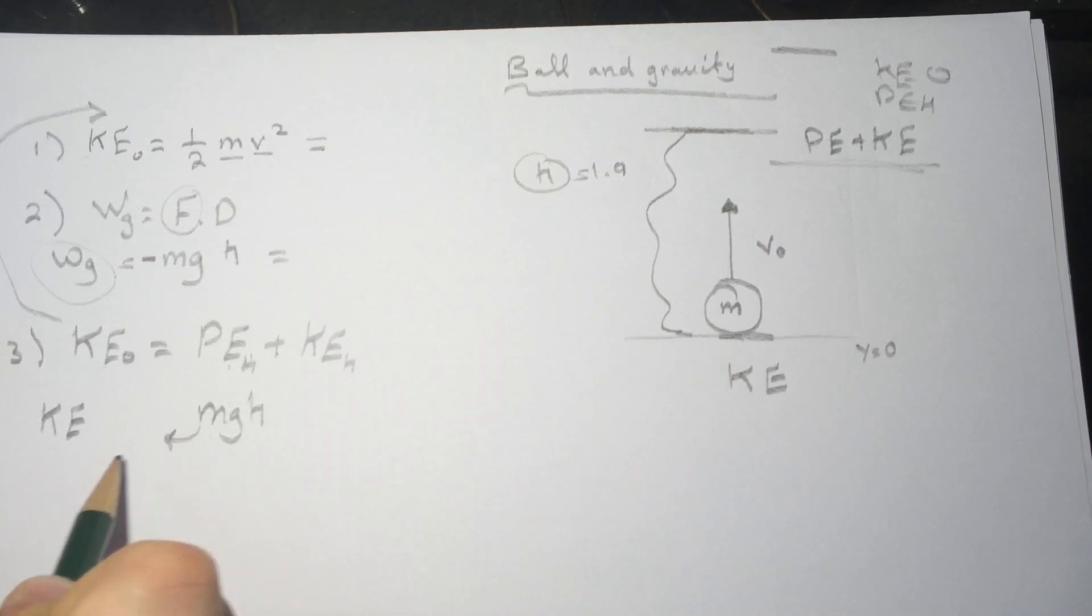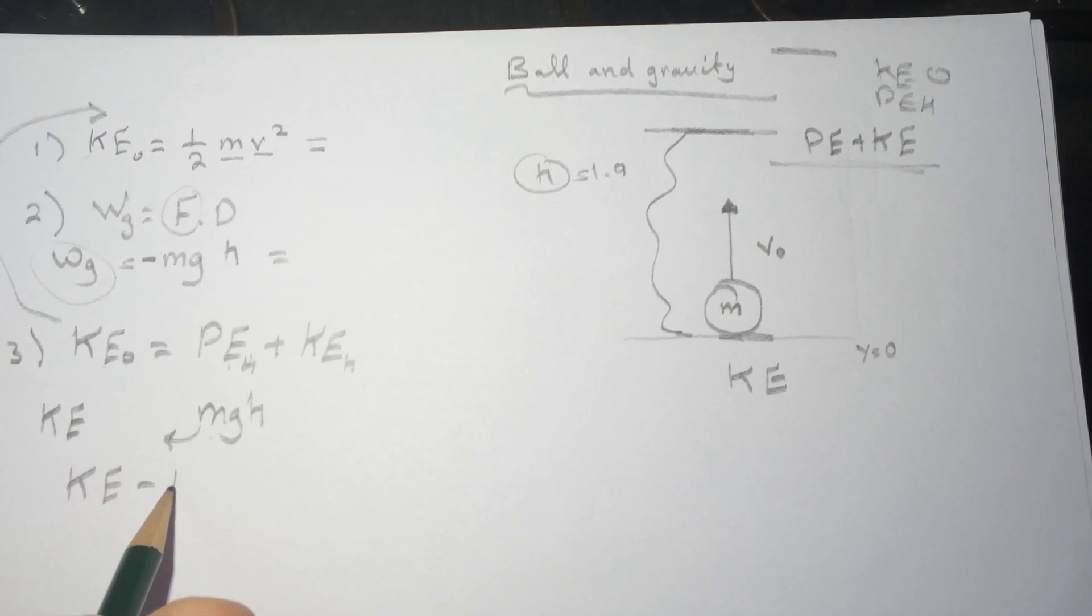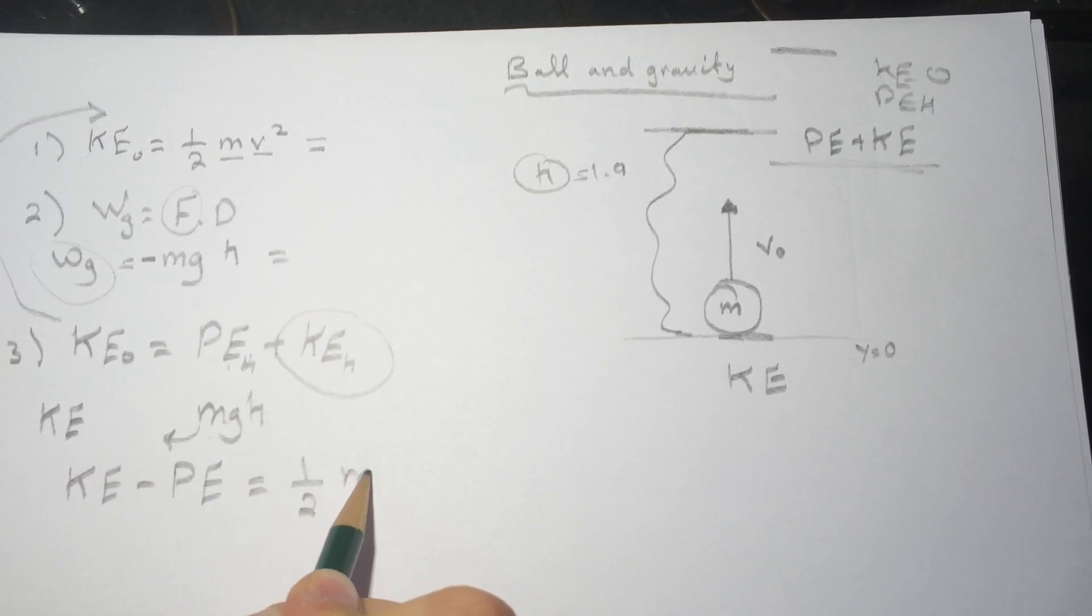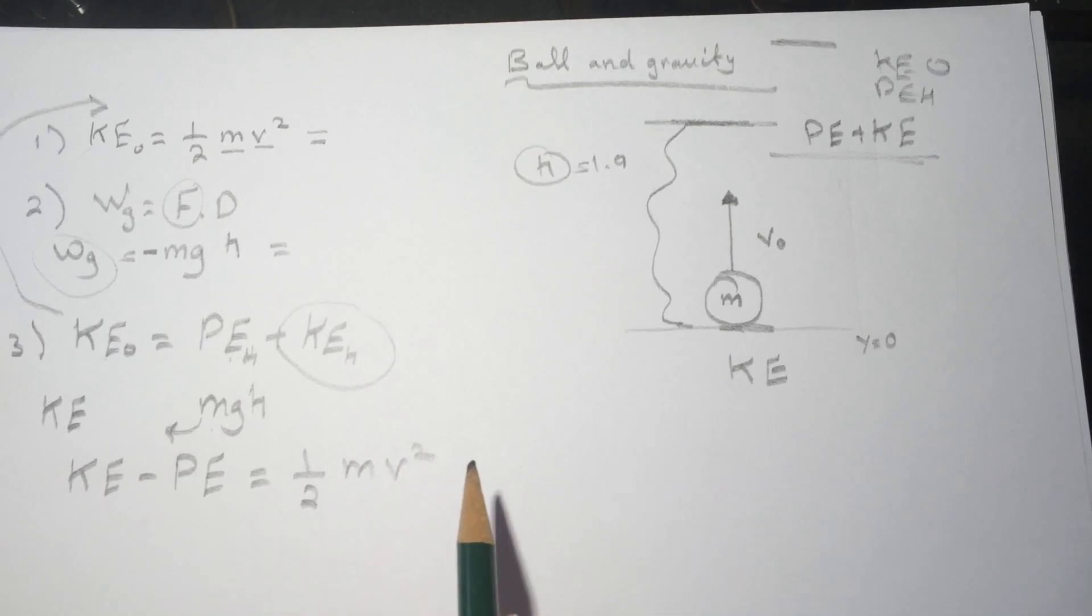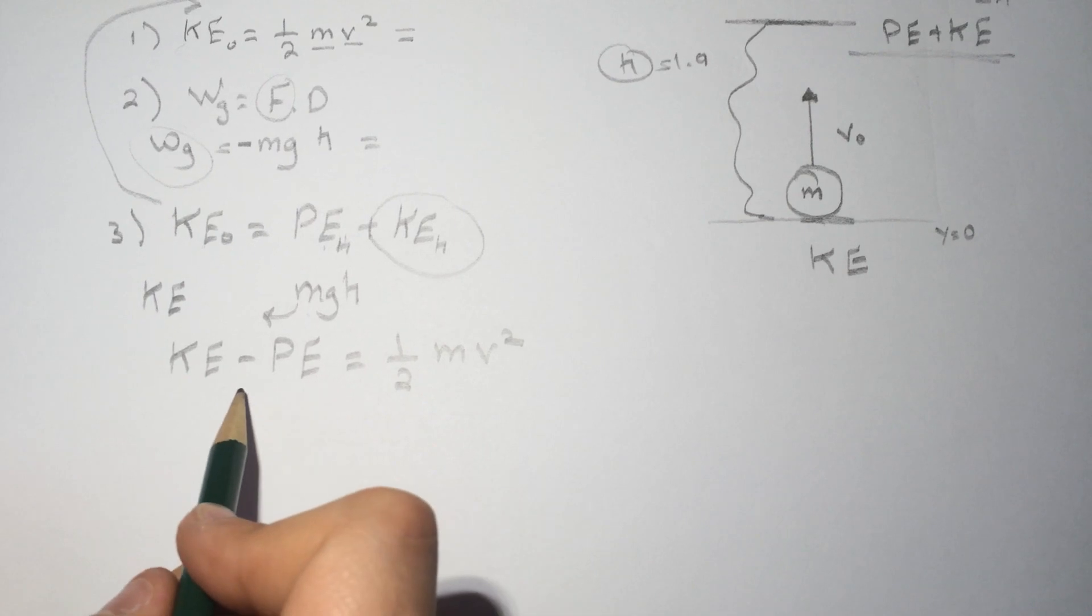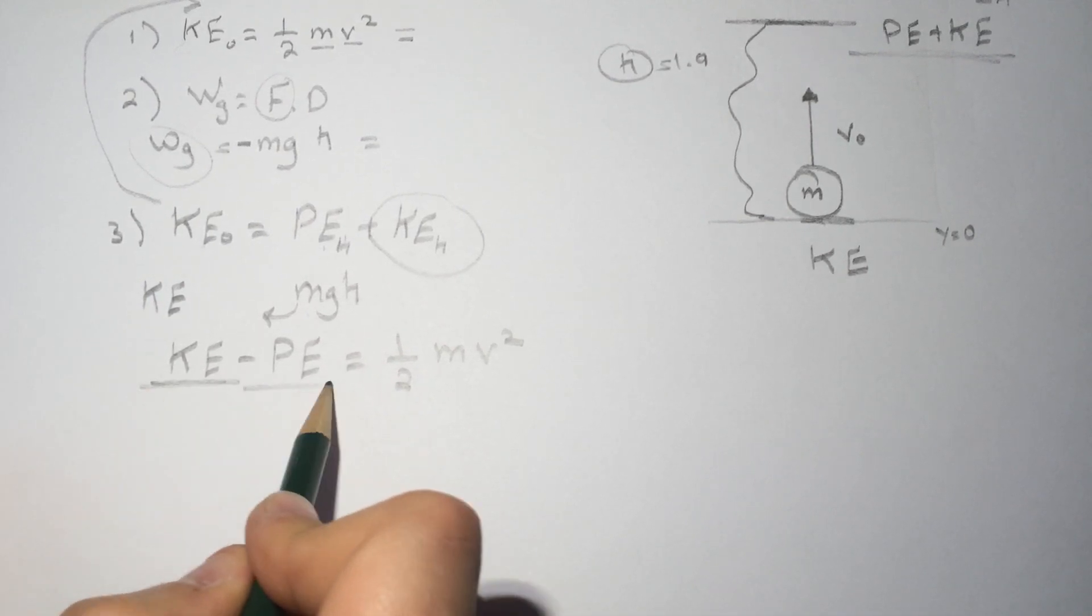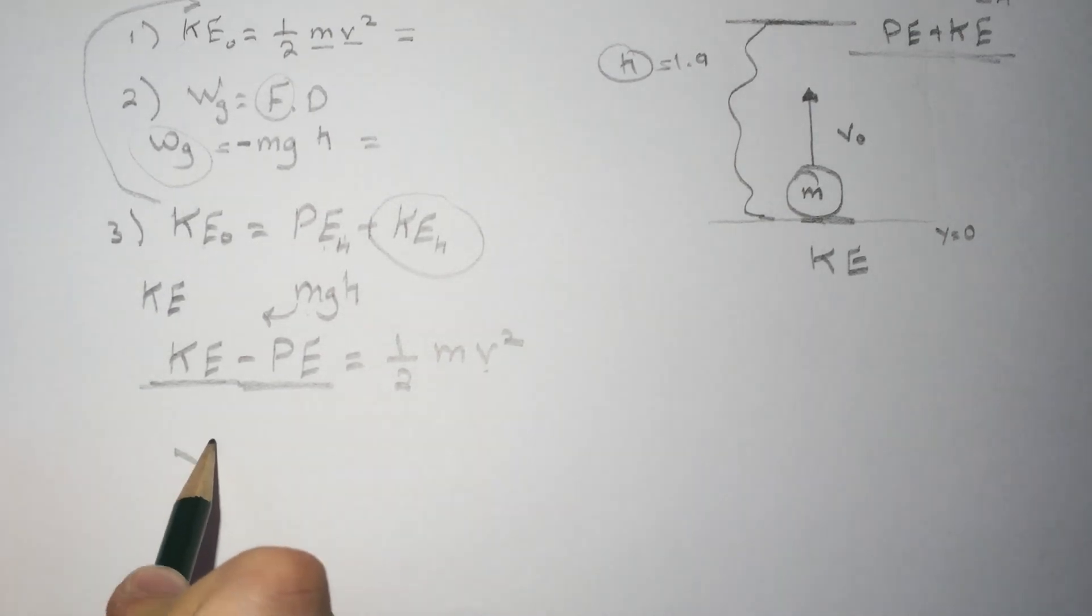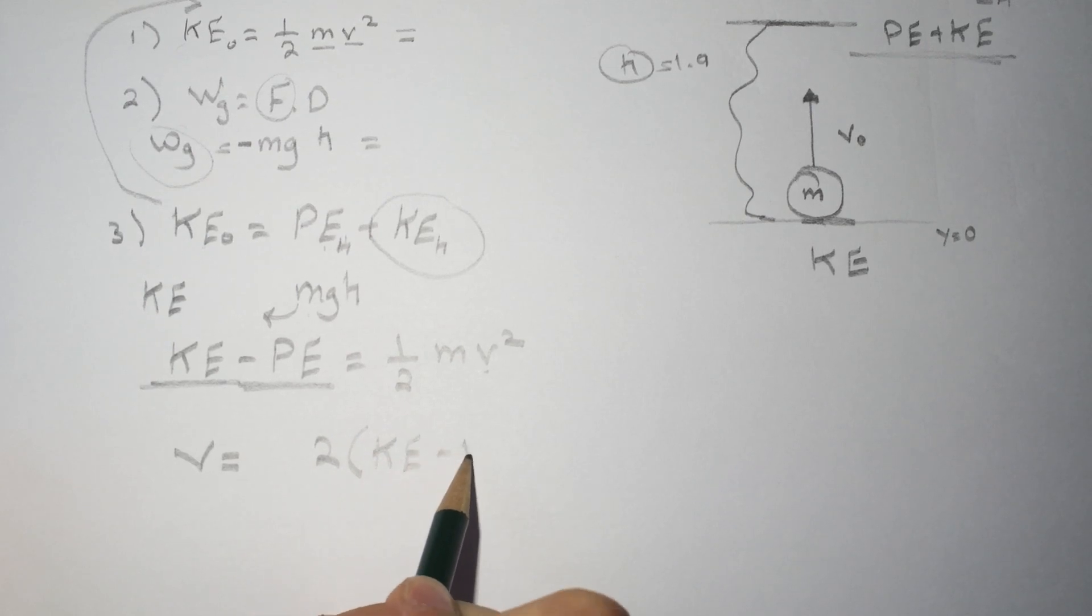to the other side it's going to be negative, so it's KE minus the PE equals—and we change this to ½mv². Then we have a value for this, we have a value for this, we're just solving for v. So v will be equal to √(2(KE - PE)/m).